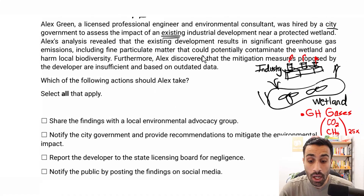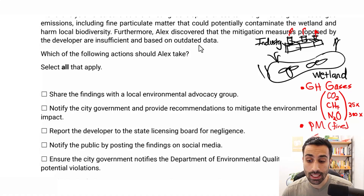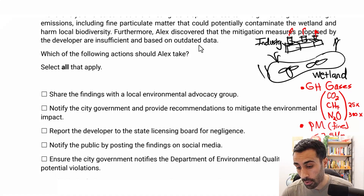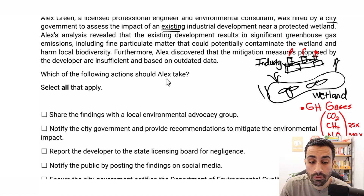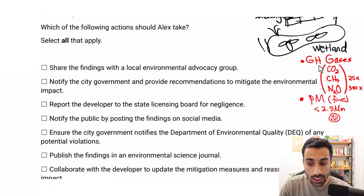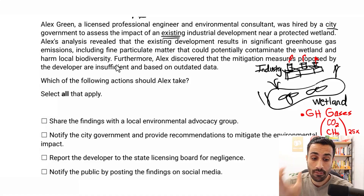The second problem is fine particulate matter from the industry's emissions. Fine particulate matter is denoted as less than 2.5 micrometers — very tiny, very fine particles. These can cause health risks to animals or anything near the wetland, entering the bodies of fish and other organisms. Combined with the greenhouse gases, this leads to contamination of the wetland and harms local biodiversity — the microorganisms, fish, animals, and insects that a wetland supports.